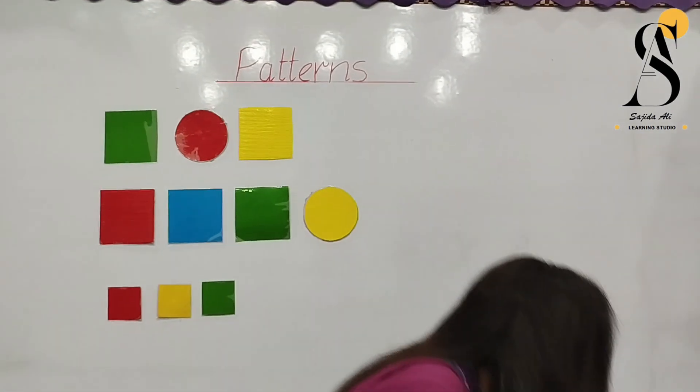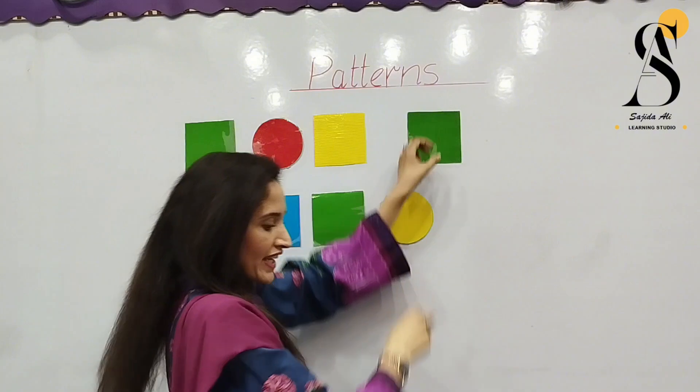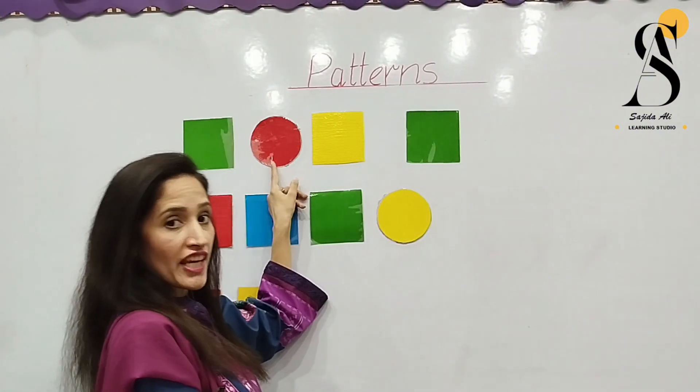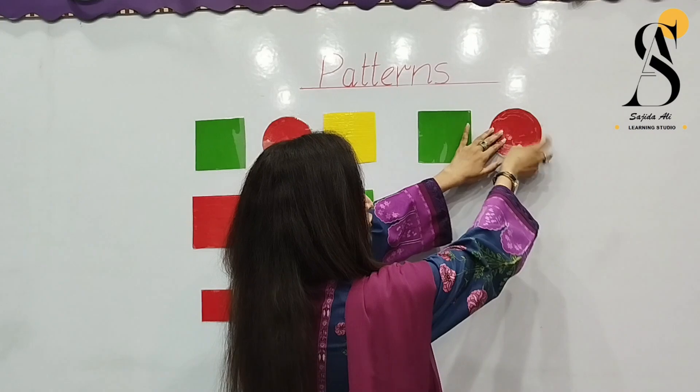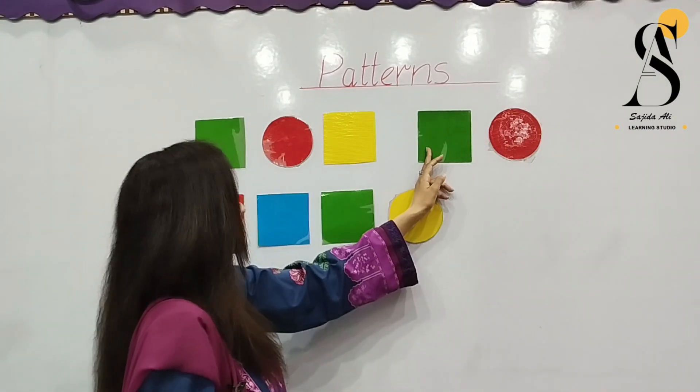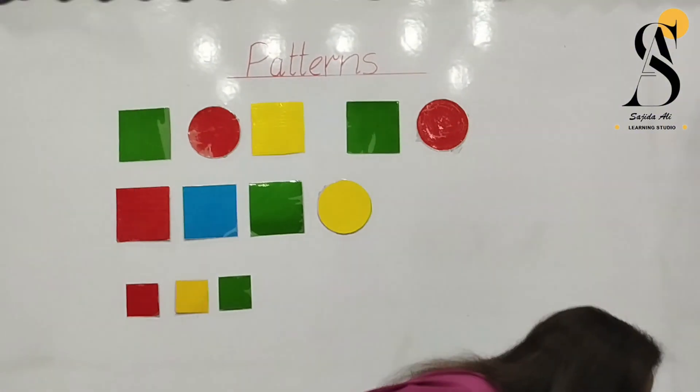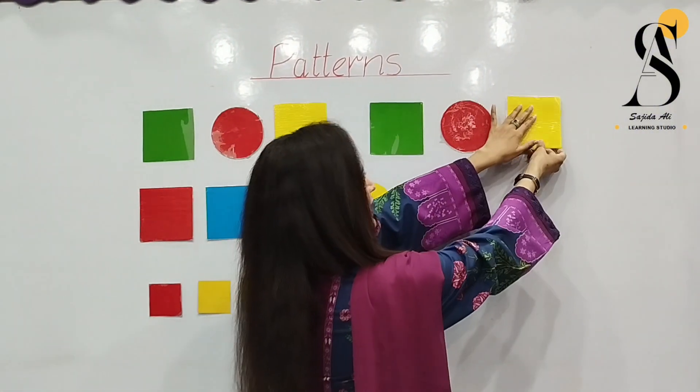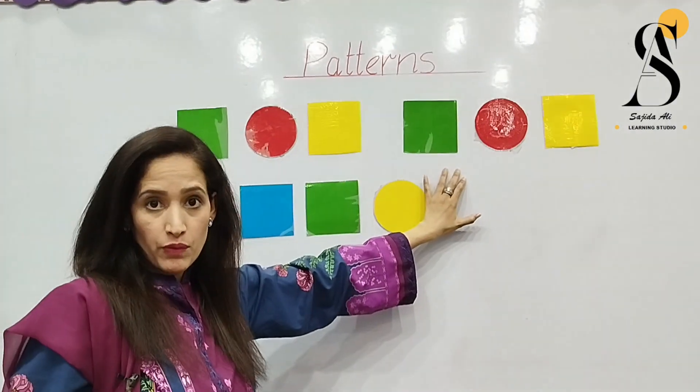The first one was green color. So we are going to complete the pattern with a green. And then what will be the next shape? It's a circle shape. It's a red circle. So we are going to paste it here. And green square, red circle. And then next will be a yellow square. Yes, we are going to place it like this. So we have completed the one pattern over here.